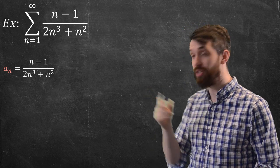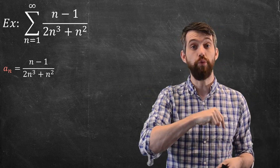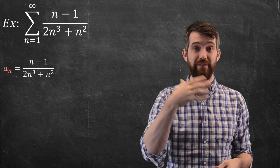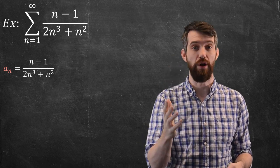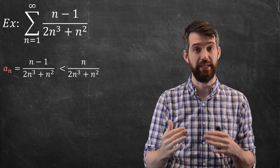Indeed, if I look at the numerator, if I look at the N-1 here, well, the numerator, because I subtract 1, is strictly less than if I have the same denominator but only N on top. As in, this is less than N over 2N cubed plus N squared.